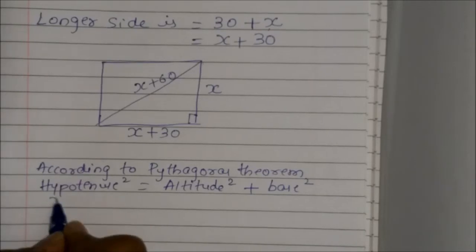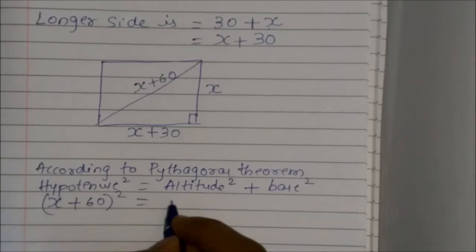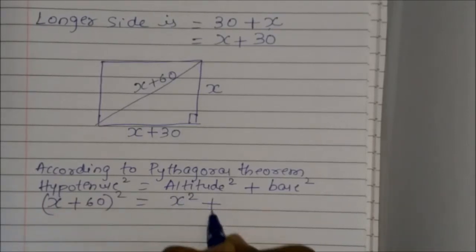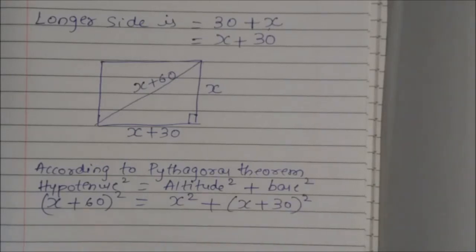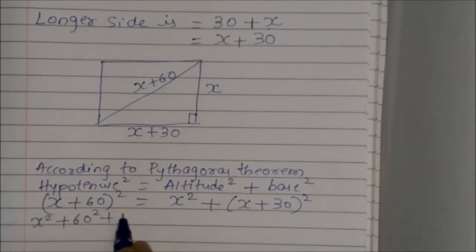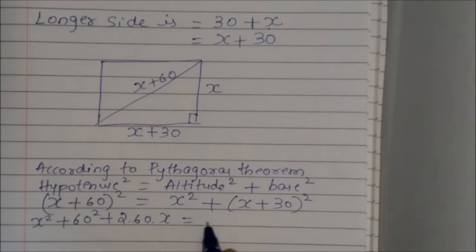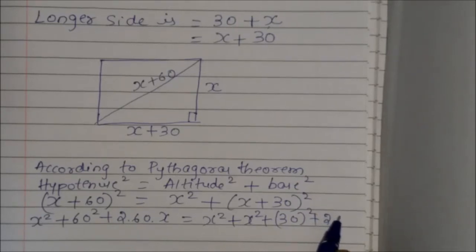According to the Pythagorean theorem, hypotenuse squared is equal to altitude squared plus base squared. So here, hypotenuse is x plus 60, so (x + 60)² equals x² plus (x + 30)². Expanding using the (a + b)² formula: x² + 3600 + 120x equals x² plus x² + 900 + 60x.